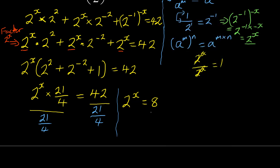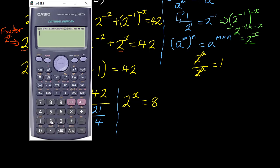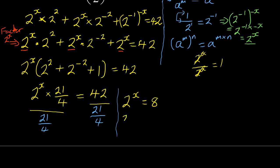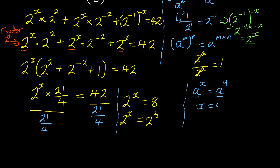Now that we have 8, express it in terms of base 2. Recall that 2 to the exponent 3 equals 8. So the equation becomes: 2 to the exponent x equals 2 to the exponent 3. By the exponential law — if the bases are equal then the exponents are equal — therefore x equals 3.